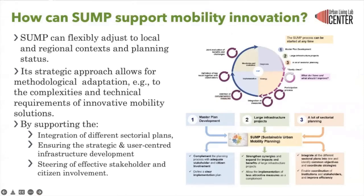So how can sustainable urban mobility planning support mobility innovation? The SUMP can flexibly adjust to local and regional context and planning status. Its approach allows for methodical adaptation to the complexities and technical requirements of innovative mobility solutions, supports integration of different sectoral plans, and ensures strategic, user-centered infrastructure development as well as effective stakeholder and citizen involvement.